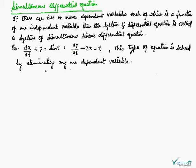Our next topic is simultaneous differential equations, which is defined as: if there are two or more dependent variables, each of which is a function of one independent variable, then the system of differential equations is called a system of simultaneous linear differential equations.